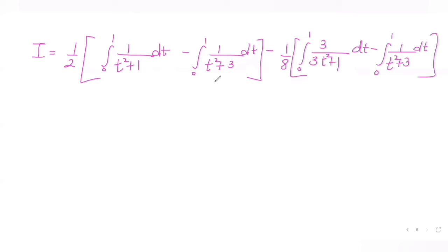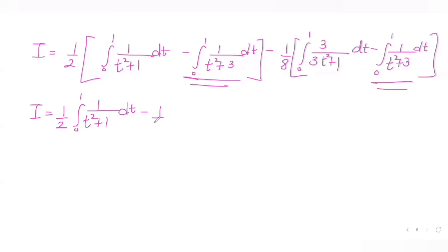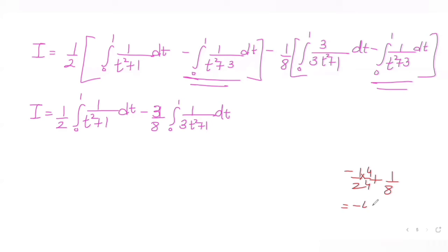Combining the 1/(t²+3) terms from both parts: −(1/2) + (1/8) = −4/8 + 1/8 = −3/8. So the full expression becomes: I = (1/2)∫₀¹ 1/(t²+1) dt − (3/8)∫₀¹ 1/(3t²+1) dt − (3/8)∫₀¹ 1/(t²+3) dt.